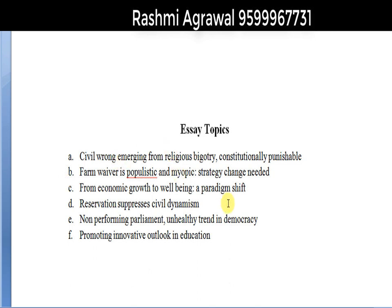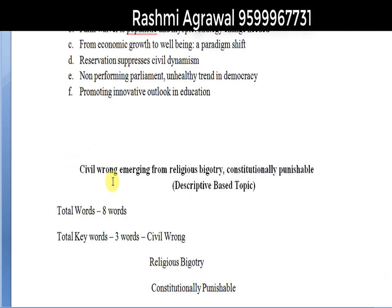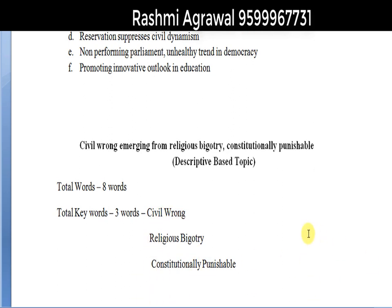Now, let's have a look at the first topic: Civil wrong emerging from religious bigotry, constitutionally punishable. This is a descriptive-based topic with eight words. Among these eight words, we have three key components: civil wrong, religious bigotry, and constitutionally punishable. In your essay, you have to elaborate on all three components and then establish the interrelationship between them. By establishing that connection, you will be able to figure out the sequence of these three components in your essay.